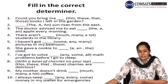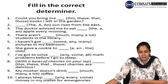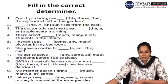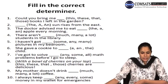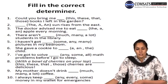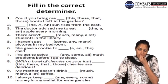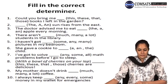Number 2 — choose articles: 'Dash sun rises from the east.' The answer is 'the' — 'The sun rises from the east.' Number 3: 'The doctor advised me to eat dash apple every morning.' The answer is 'an apple' — because 'apple' starts with a vowel sound. Any word that starts with a vowel sound takes 'an' before it. Number 4: 'There aren't dash students in the library.' The answer is 'many' — 'There aren't many students in the library.'